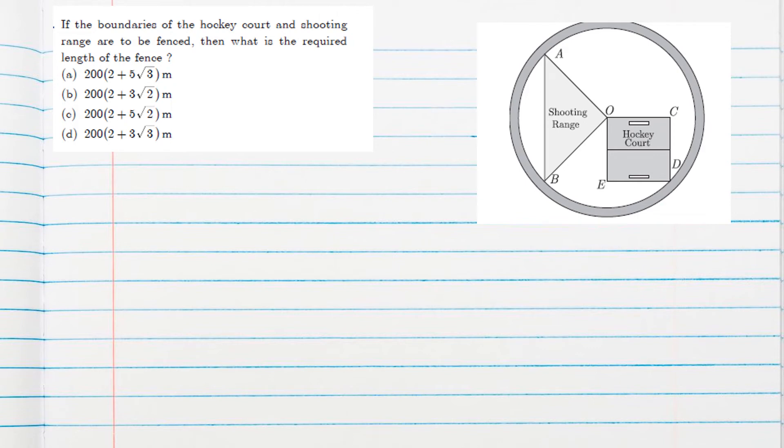Next question is if the boundaries of the hockey court and shooting range are to be fenced. So for fencing, that means here we need to find perimeter. So perimeter of square will be 4a, which we already got as 100 root 2. So 400 root 2 meters. Now after getting the perimeter of triangle, we will add.